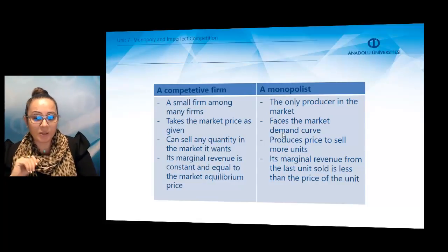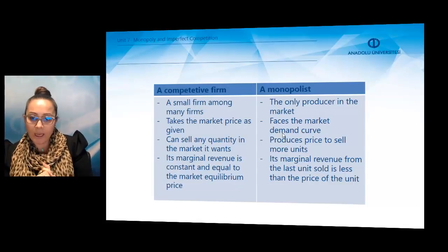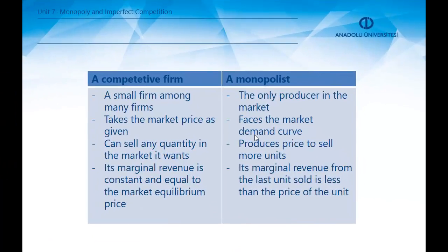The differences can be summarized as follows: a competitive firm is one small firm among many, while a monopolist is the only producer in the market. A competitive firm takes the market price as given, whereas a monopolist faces the market demand curve. A competitive firm can sell any quantity it wants at the market price, but a monopolist must lower its price to sell more units. Finally, a competitive firm's marginal revenue is constant and equal to the market equilibrium price, but for a monopolist, marginal revenue from the last unit sold is less than the price of that unit.